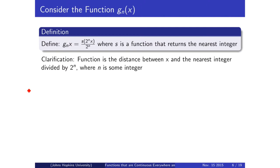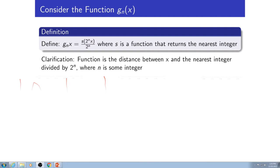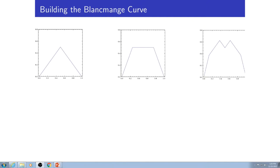You can actually define these functions mathematically. The function we found is where you take the distance between x and the nearest integer divided by 2 to the n, where n is just any integer. The first iteration, g of 0, is going to look a lot like the absolute value function — one point of non-differentiability, one kink, graphed from 0 to 1, with a max height of one half. Similarly, g of 1 doubles the number of kinks and peaks while halving the maximum height. For every iteration of g of n, the max height is 1 over 2 to the n, and every new iteration has double the number of peaks as the last.